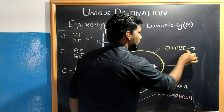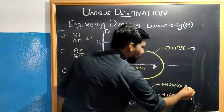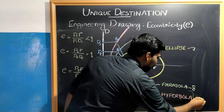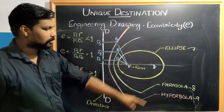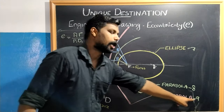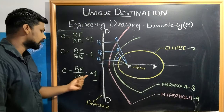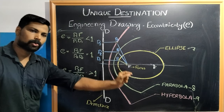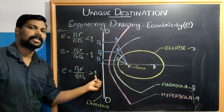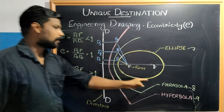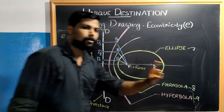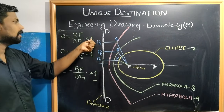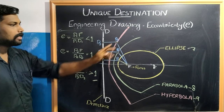Here is a helpful trick: Ellipse has 7 letters — eccentricity less than 1. Parabola has 8 letters — eccentricity equal to 1. Hyperbola has 9 letters — eccentricity greater than 1. So if you remember the letter count, you can recall the eccentricity: less than 1 for ellipse, equal to 1 for parabola, and greater than 1 for hyperbola.